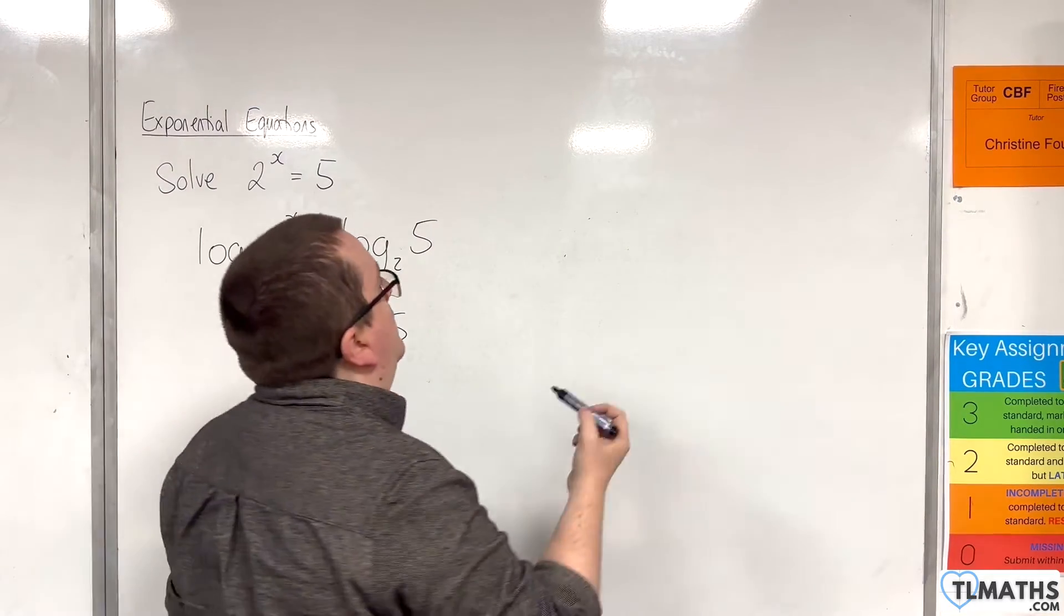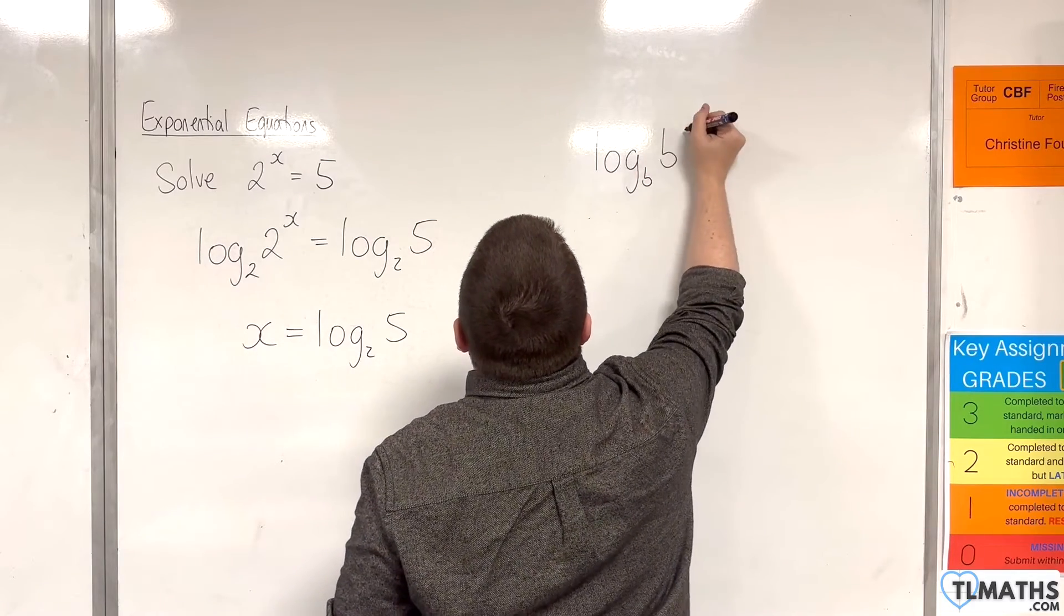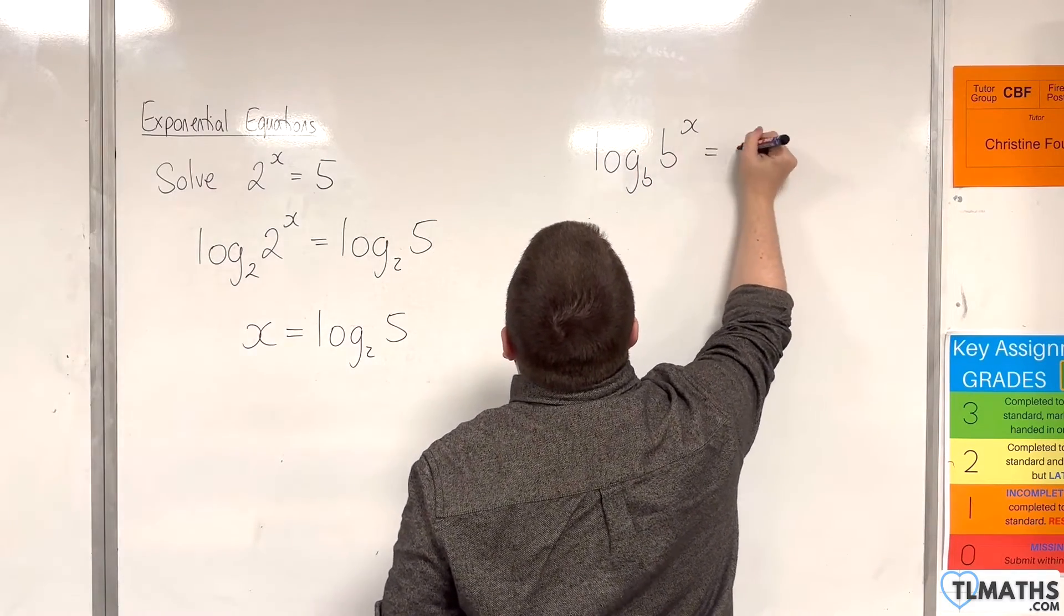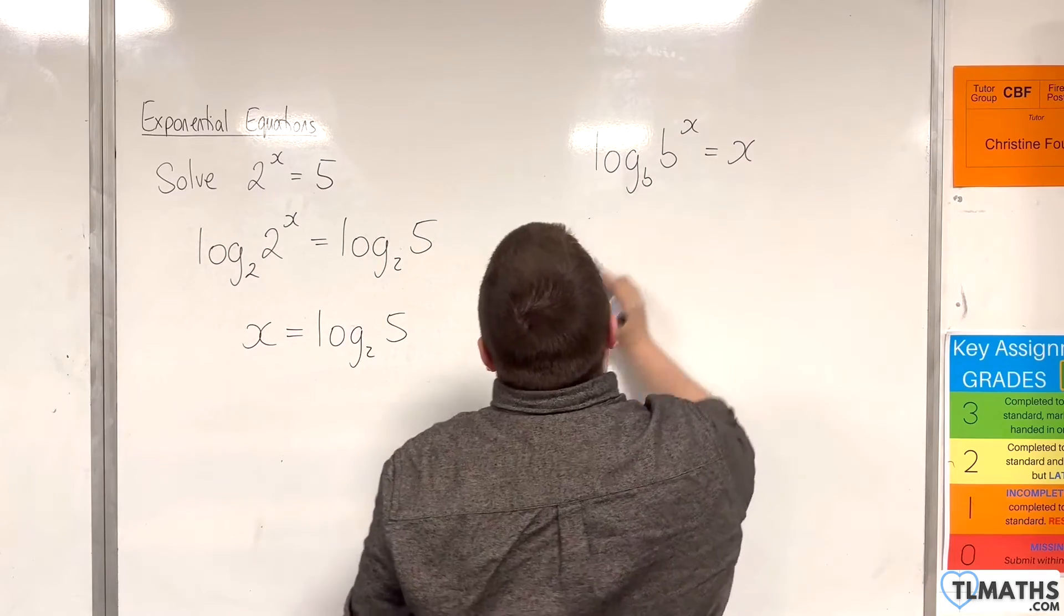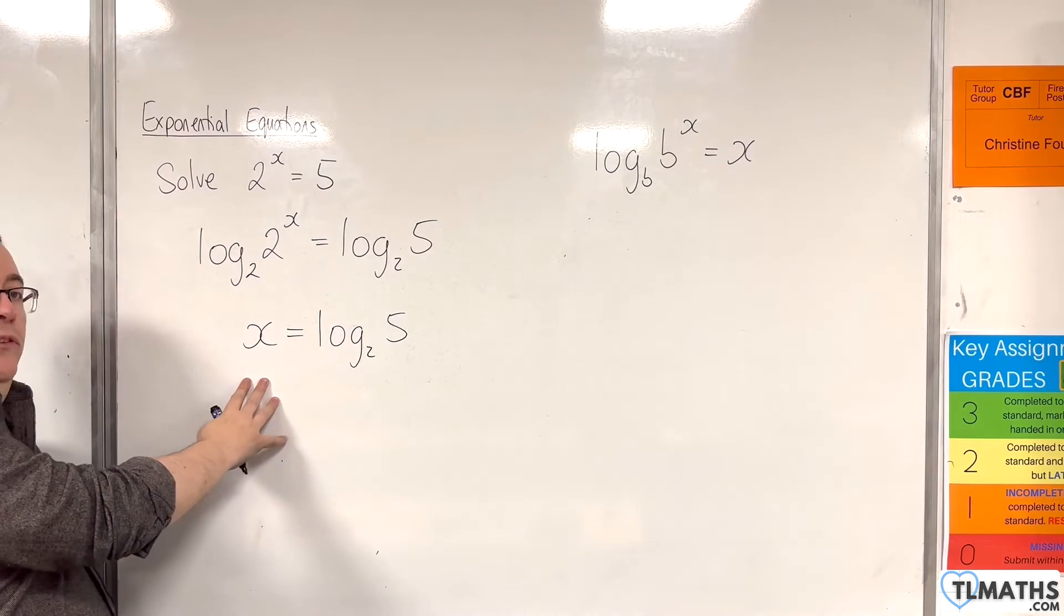This is essentially that log law that we've been working with. Log base b of b to the x is equal to x. It's just, in this case, b is equal to 2. And so, that must be equal to that.